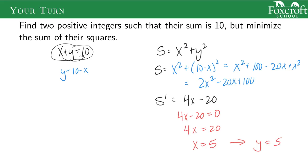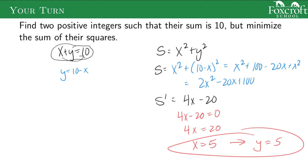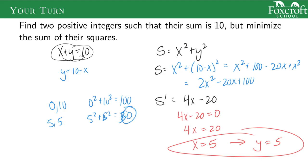When you multiply it all out, your only critical point candidate is five. You can also check the endpoints — since they're positive integers, the endpoints would be 0 and 10. If you plug in 0 and 10: zero squared plus ten squared is 100. For five and five: five squared plus five squared is 50. So the minimum is when both integers are five, giving a sum of squares of 50.